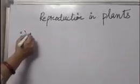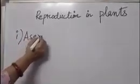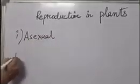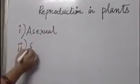First is Asexual Reproduction. And the other one is Sexual Reproduction.